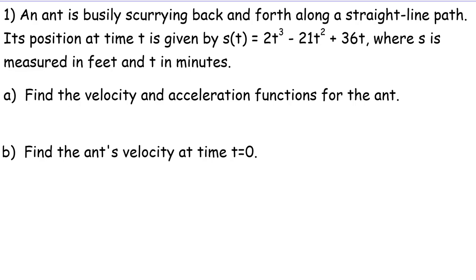Part a. Find the velocity and acceleration functions for the ant. Okay, so remember that velocity is the derivative of position. In other words, v(t) is s'(t). So v(t) would be, and we just have a polynomial function, a sum of terms, we can use the power rule and find the derivative of each term. The derivative of 2t^3 is 6t^2 minus the derivative of 21t^2 is 42t, plus the derivative of 36t is 36.